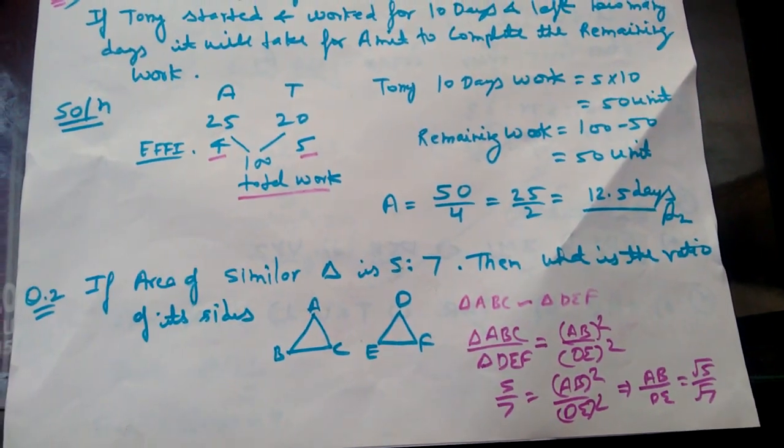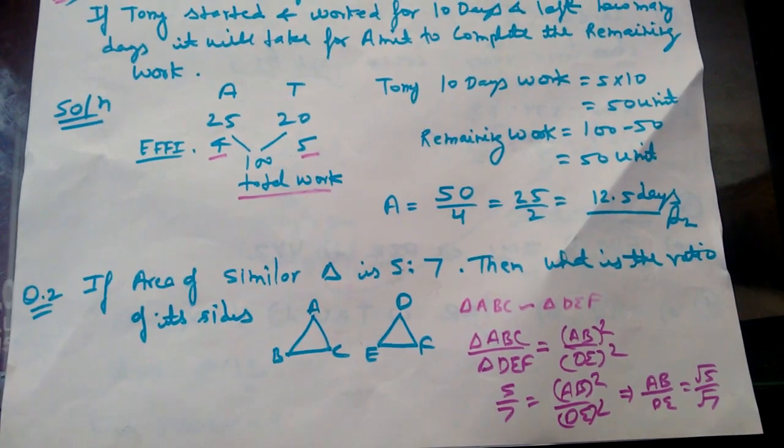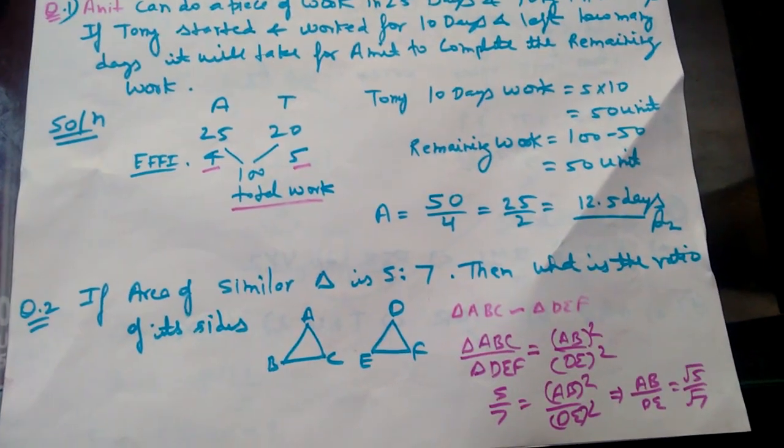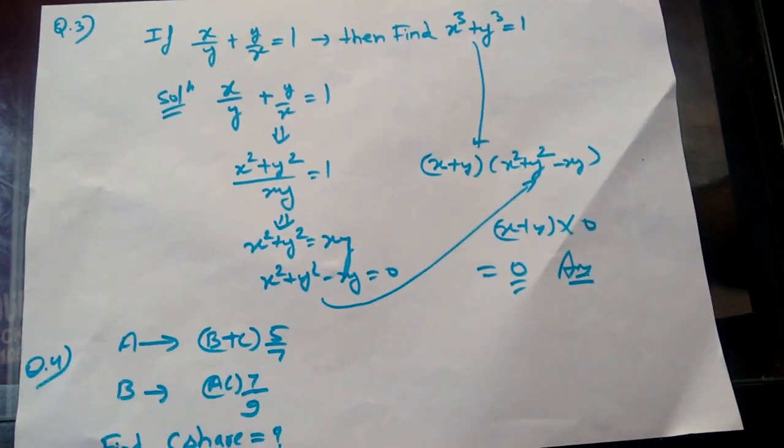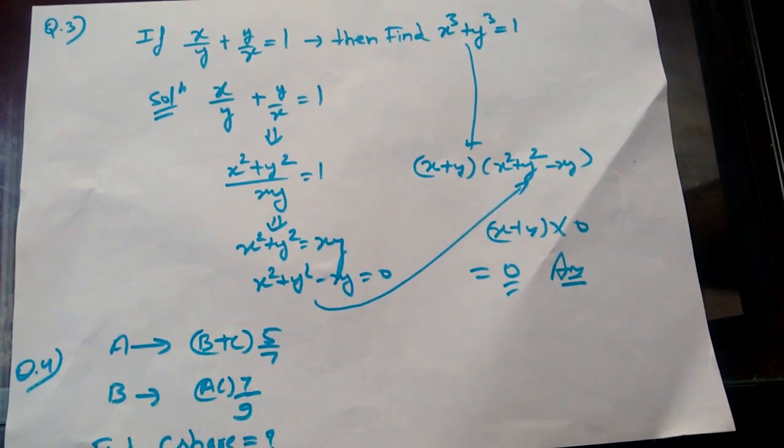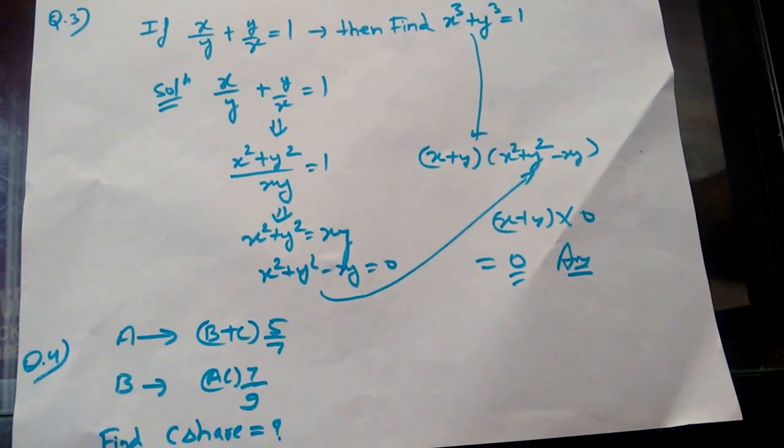if x by y plus y by x is equal to 1, then find x cubed plus y cubed. It's an algebra question. So LCM is equal to xy. Then x squared plus y squared is equal to xy.